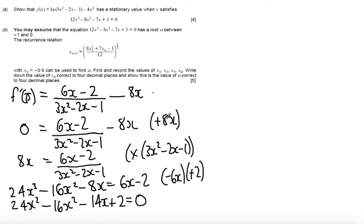I'm very close to this cubic equation now so what I want to do is divide both sides of the equation by 2 and that leads me to 12x cubed minus 8x squared minus 7x plus 1 equal to 0 as required.